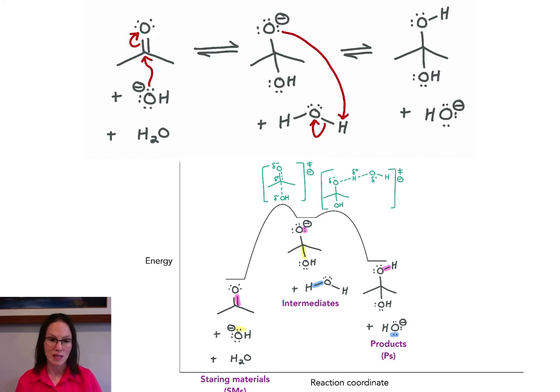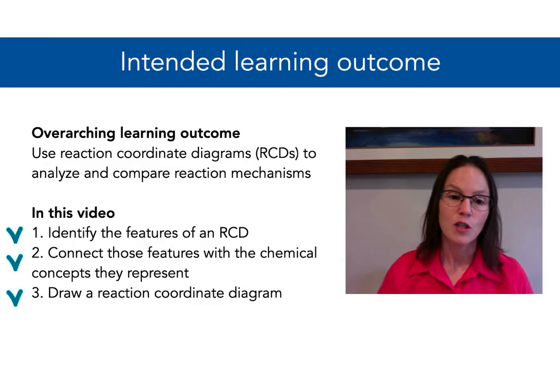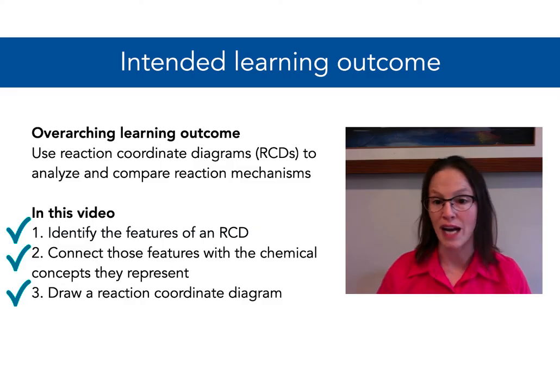We can analyze the reacting species, transition states, intermediates, activation energies, etc., just as we did for the reaction in the forward direction. Using a principle called microscopic reversibility, the reaction in the reverse direction actually follows the same path as the reaction in the forward direction. So at this point, you should be able to draw and label reaction coordinate diagrams for a reaction mechanism.